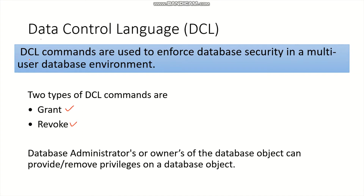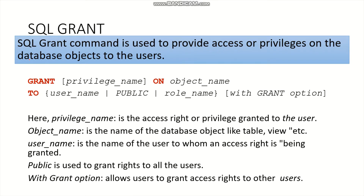We have two commands: grant and revoke. In the database, the database administrators of the database object can provide or remove privileges on a database object. Database objects can be the database itself, views, tables, and even a single attribute in the table. With the help of the grant command, we can provide access or privileges to a single user or multiple users, so they may use objects.